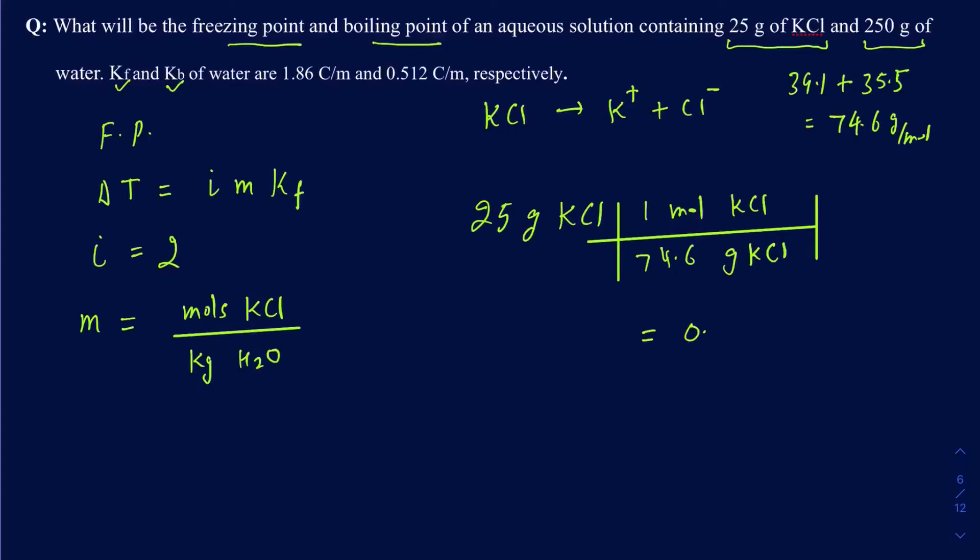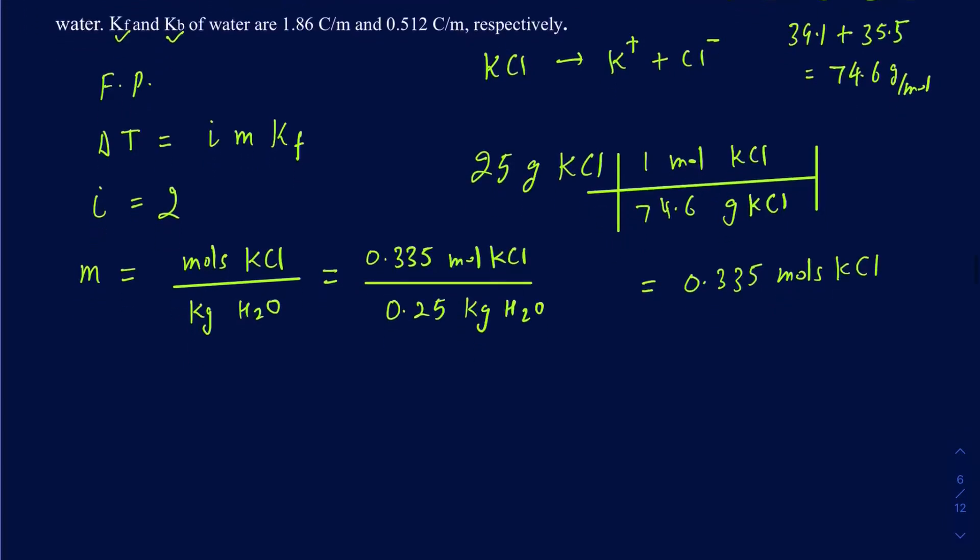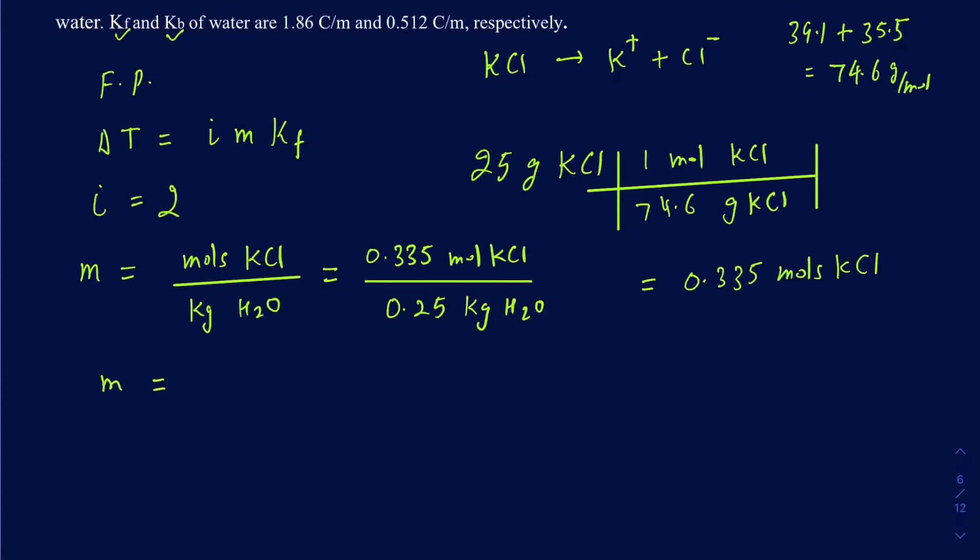So it's going to be 25 divided by 74.6, so it's 0.335 moles of KCl. So I can go back and figure out the molality now, so it's going to be 0.335 moles of KCl. Divide that by kilograms of water. So you're given 250 grams of water, so what's going to be the kilograms then? Well, that's just going to be 0.25 kilograms of water, because you always do the solvent in case of molality.